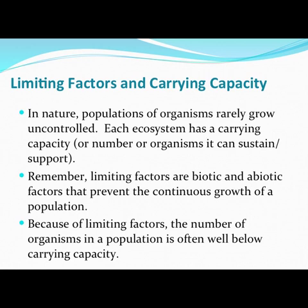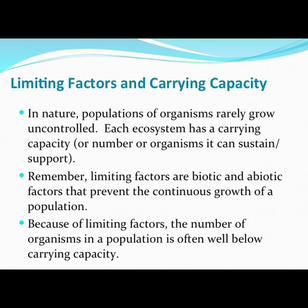In nature, populations rarely grow uncontrolled. Each ecosystem has a carrying capacity — a number of organisms it can sustain and support. Rabbits, squirrels, foxes, and hawks are all interrelated. Limiting factors are both biotic and abiotic: biotic factors include food systems like grass and what animals eat, while abiotic factors include weather and water. These factors prevent the continuous growth of a population, and as a result, organism populations often remain well below the carrying capacity.